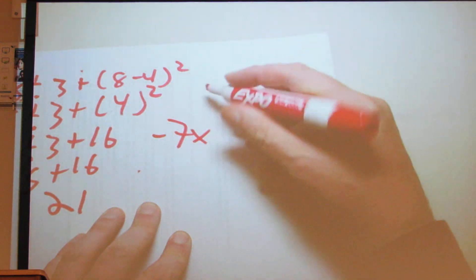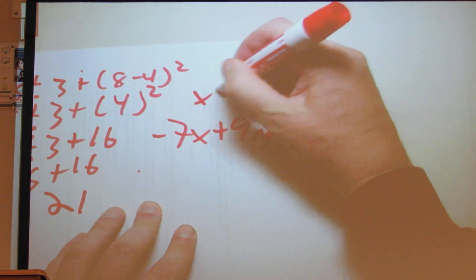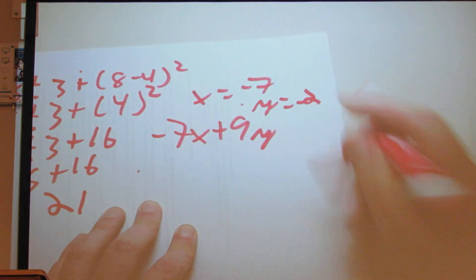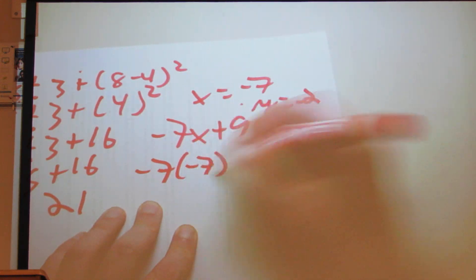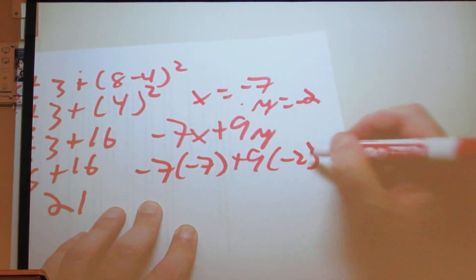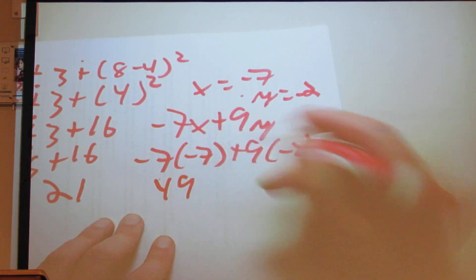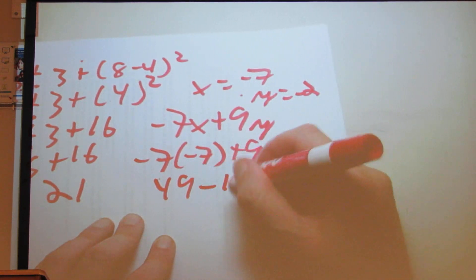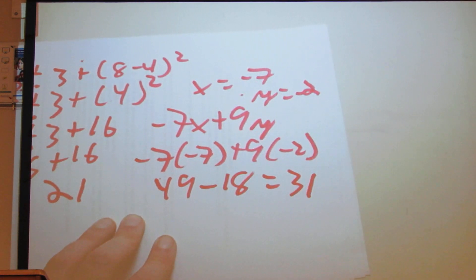Next you'll have something like negative 7x plus 9y where x is negative 7 and y is negative 2. We plug these numbers in: negative 7 times negative 7 plus 9 times negative 2. Negative 7 times negative 7 is positive 49; 9 times negative 2 becomes minus 18. So 49 minus 18 equals 31.